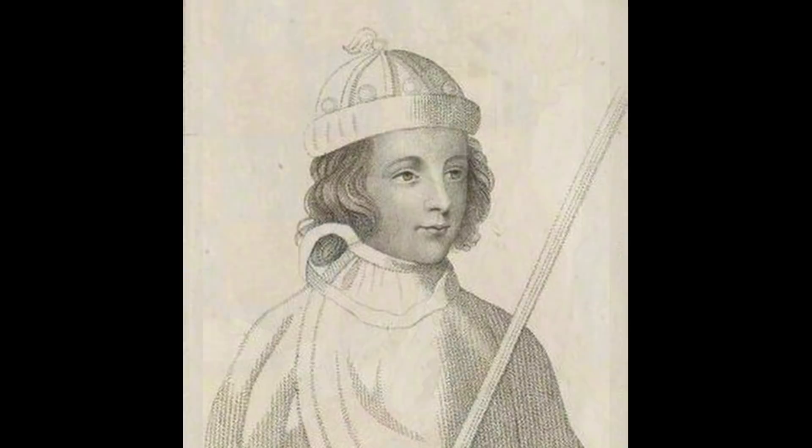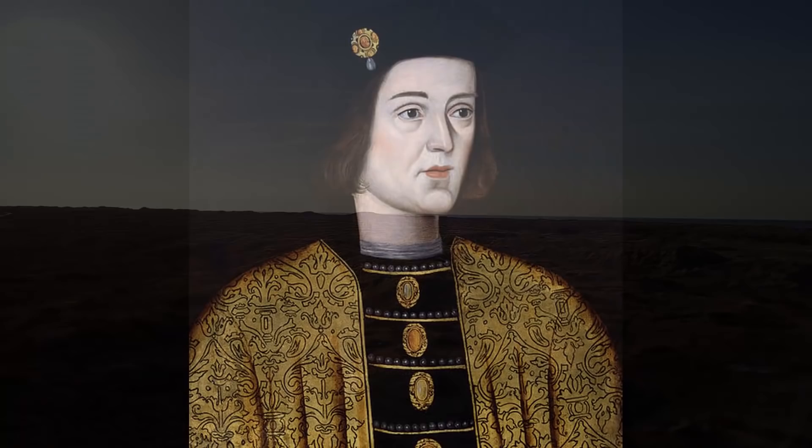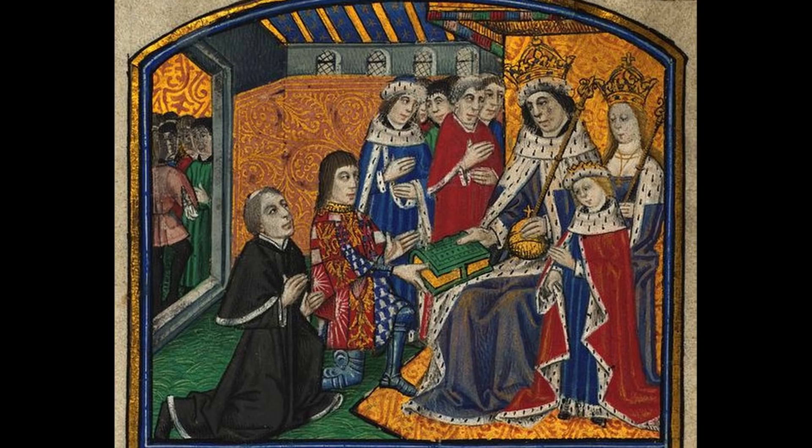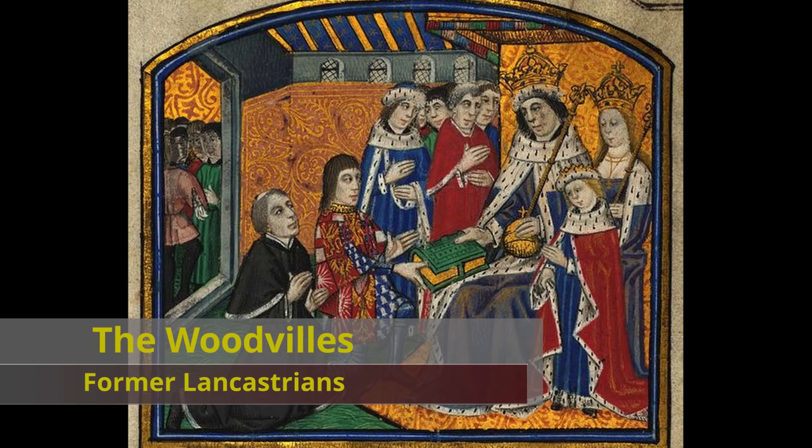Henry VI, Queen Margaret, and their son Prince Edward of Westminster fled to Scotland, and much of the North remained in Lancastrian control. The victorious 19-year-old Edward decided to head south to his coronation, which took place on June 28, 1461. Many Lancastrians refused to join the Yorkist cause, however there were some that did, and this included the Woodville family, who would come up shortly.